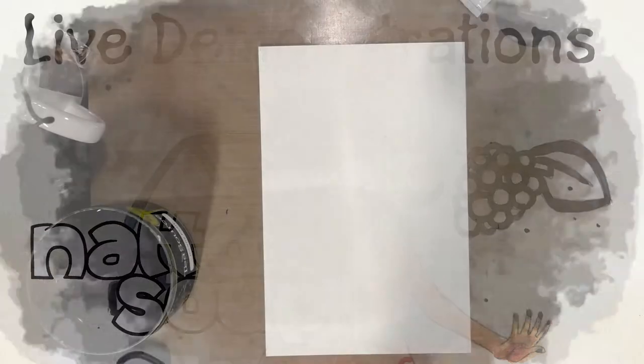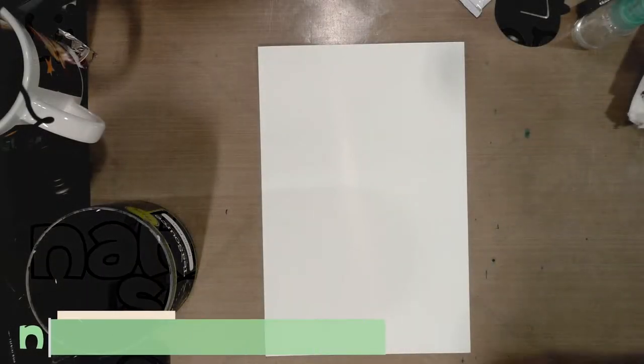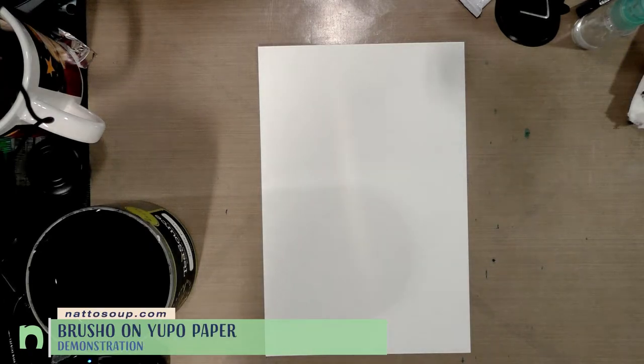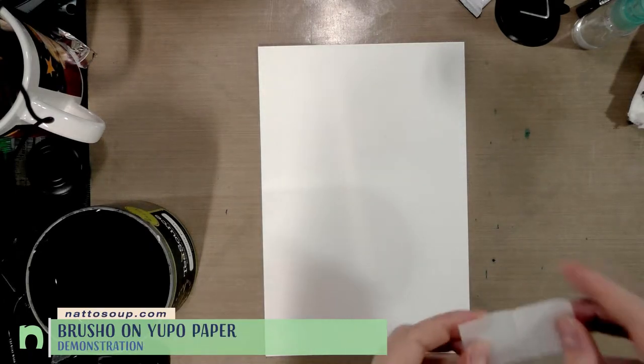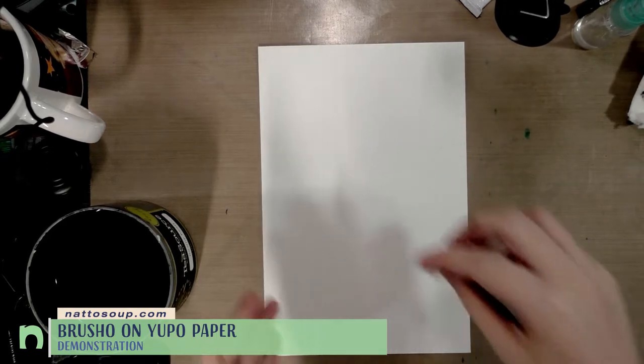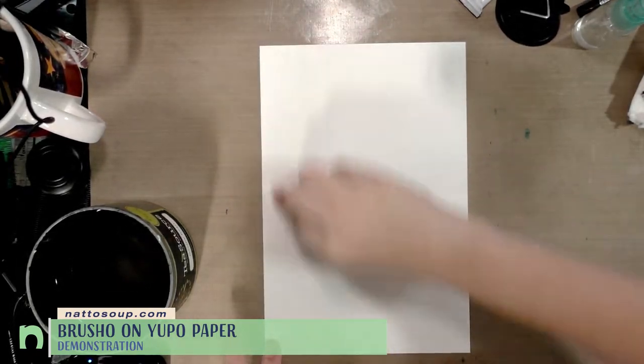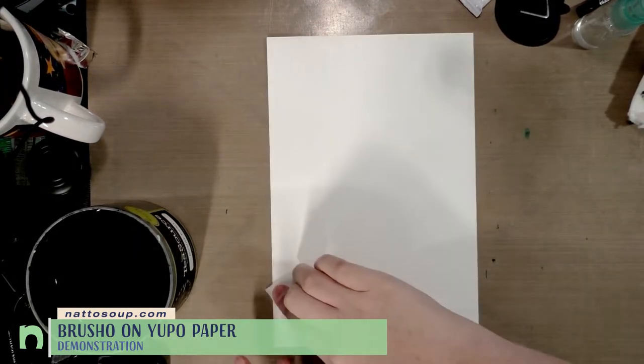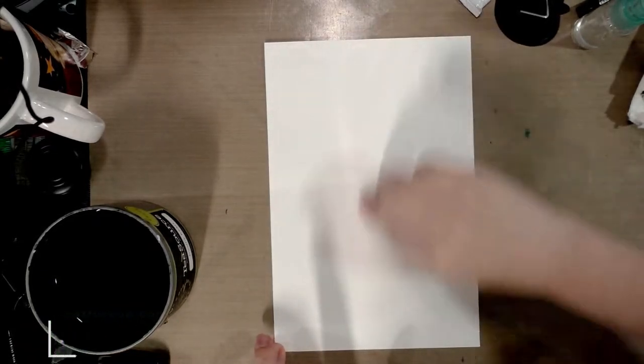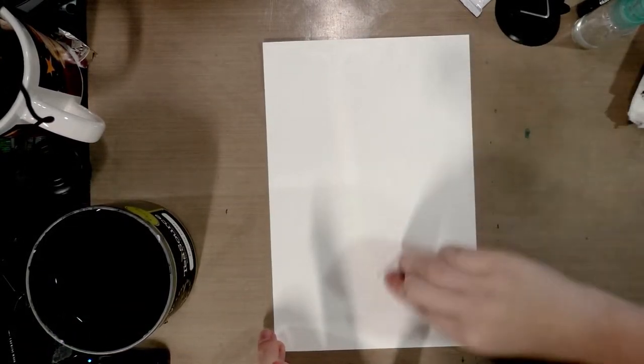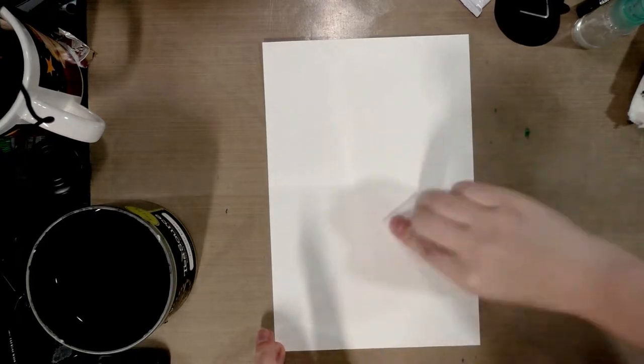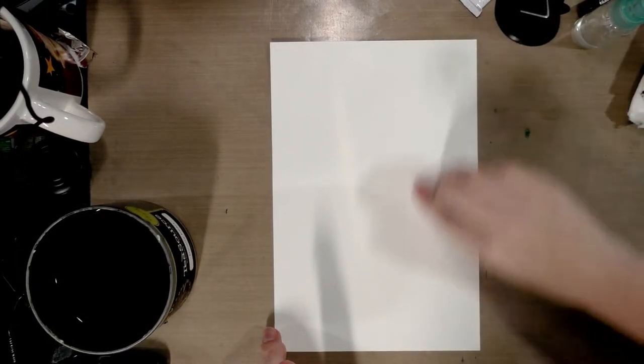Hey guys, today we're testing out Brusho on Yupo paper. Yupo is a polypropylene paper, a plastic synthetic paper. We're going to wipe it down with a rubbing alcohol wipe to remove any excess finger oils because those will affect how the watercolors sit.